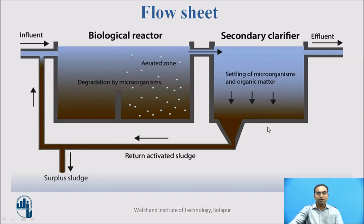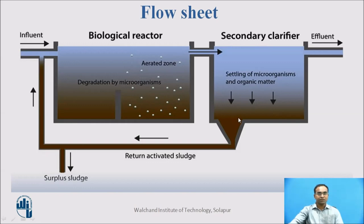After aeration, these microorganisms will come into the sedimentation tank and flocculation and sedimentation happen simultaneously. The sludge collected and settled in the sedimentation tank is taken back. We use activated sludge, so all this settled sludge is the activated sludge. Some portion of the sludge is mixed with the influent and taken back to the aeration tank, and the surplus amount of sludge is taken out from the whole system. Whatever the effluent or clean water present above the sedimentation tank is taken out as effluent.